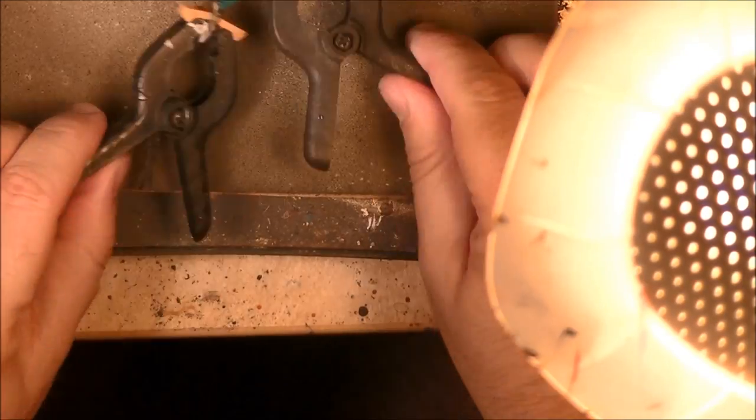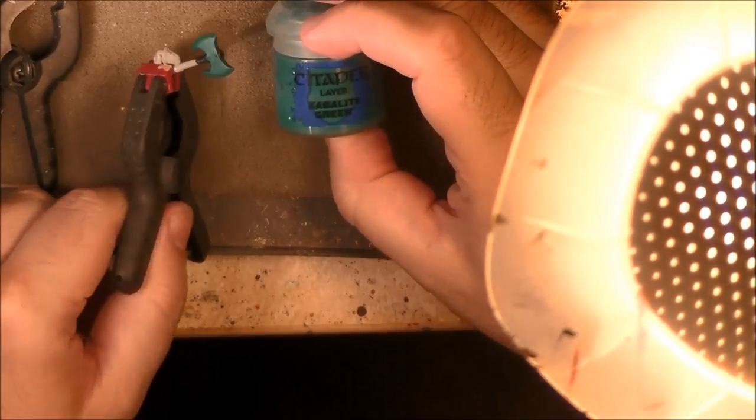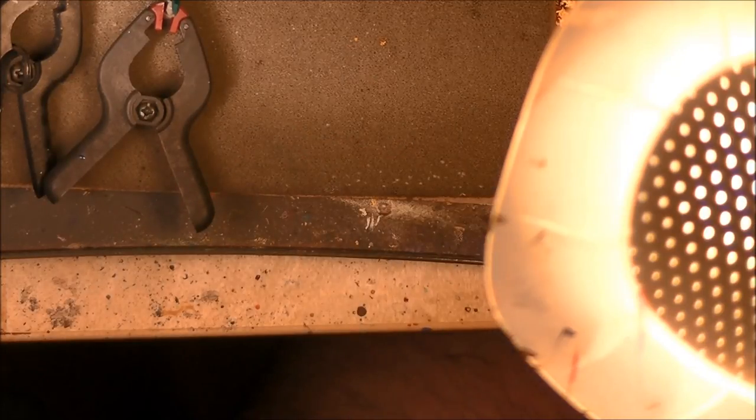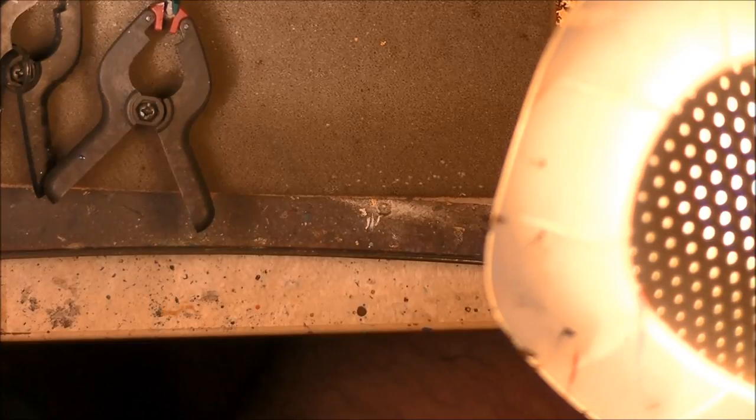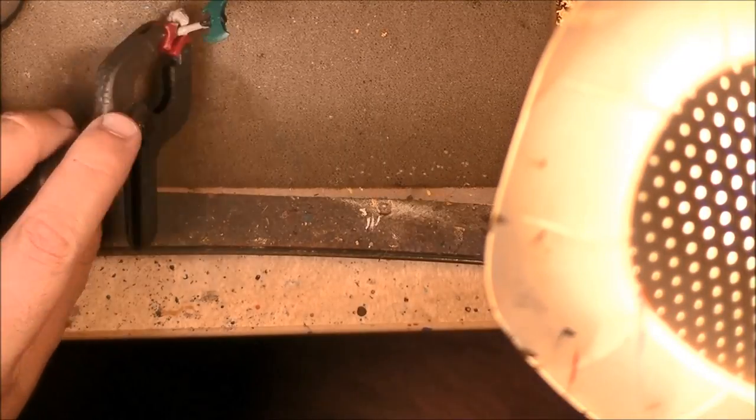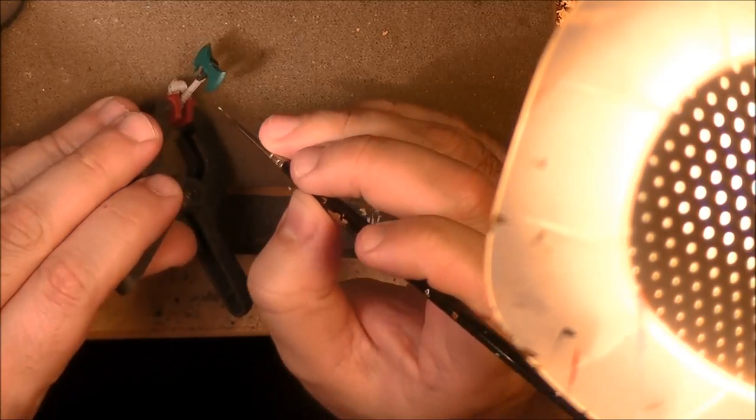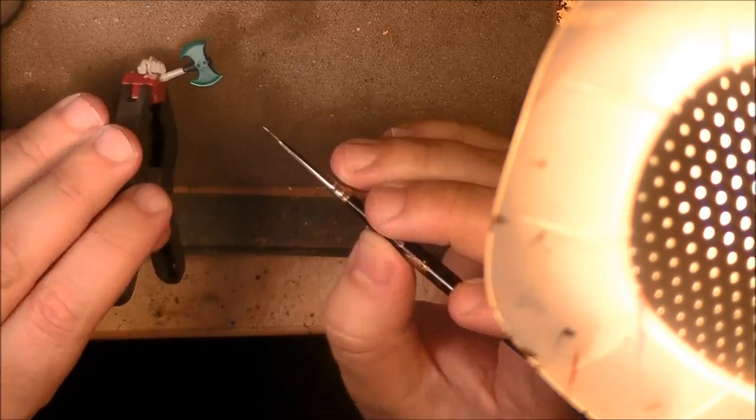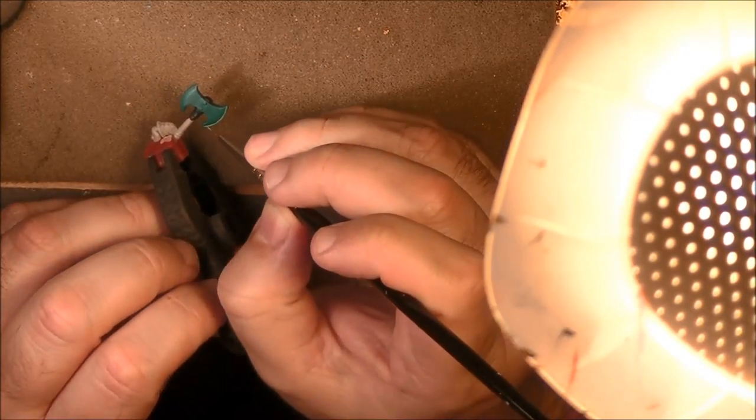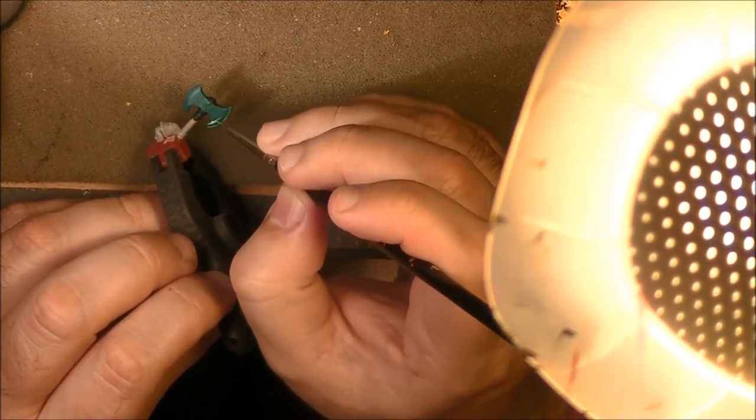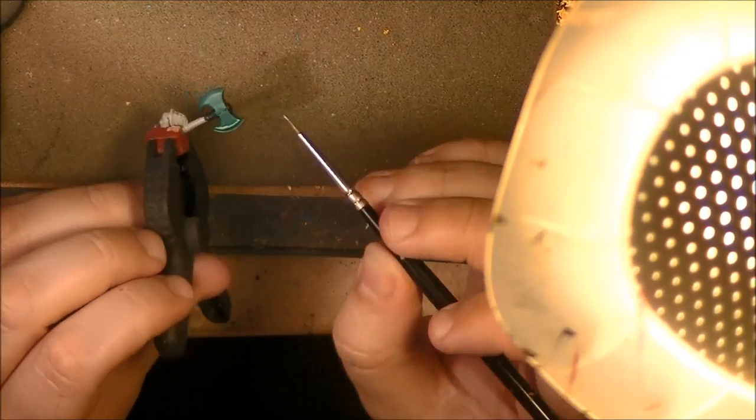So once Kabalite Green has dried, we are going to start working with Sybarite Green to do the first highlights. We are going to... remember that we want like glossy thing. So first I will go for quite sharp highlights.